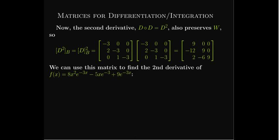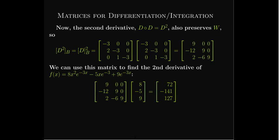We can use that matrix to calculate the second derivative of a function that is a linear combination of functions in set B. For the function 8x²e^(-3x) - 5xe^(-3x) + 9e^(-3x), the coordinate vector is (8, -5, 9). Performing the matrix-vector multiplication gives components 72, -144, and 127. So the second derivative is 72x²e^(-3x) - 144xe^(-3x) + 127e^(-3x).